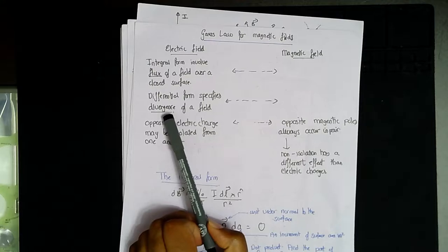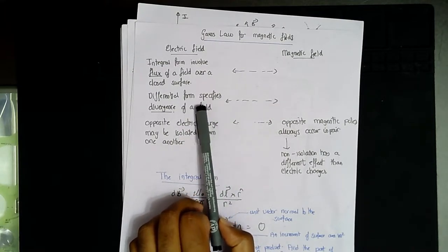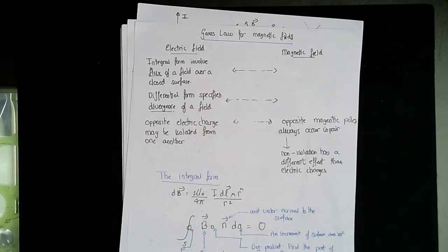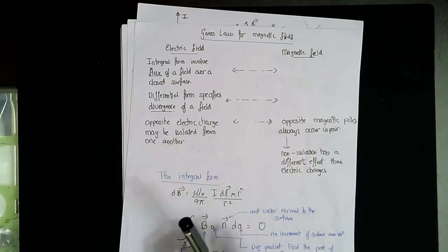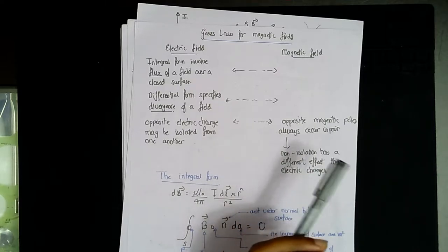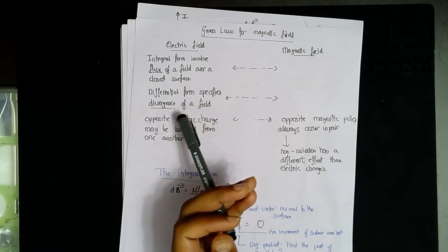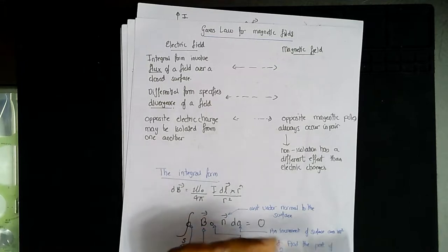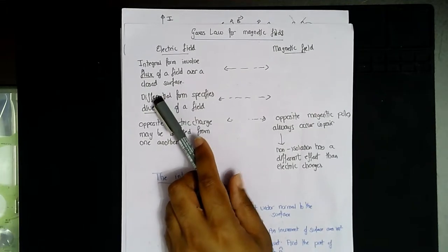The differential form specifies the divergence of the electric field; for the magnetic field, the differential form also specifies the divergence of the field, showing at a particular point in space whether the field is moving away from the point or moving towards the point. The same applies in the magnetic field — we can see whether the vector is moving outward or inward. That's what they have in common, but there are a few things that make them different.